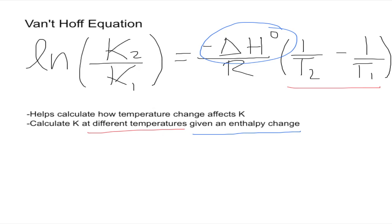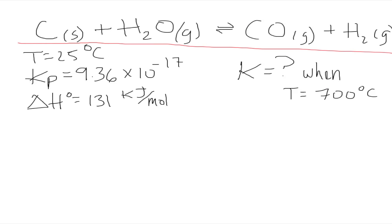Now let's see how a problem that requires the use of the Van't Hoff equation usually goes. Right here is our chemical reaction. This reaction starts at a temperature of 25 degrees Celsius with a K value of 9.36 times 10 to the negative 17, and we also have an enthalpy change of 131 kilojoules per mol.